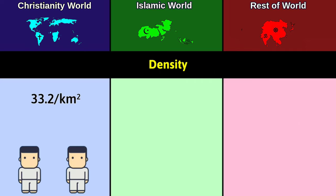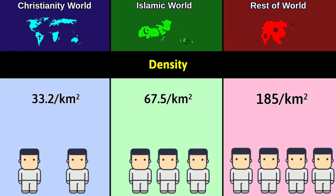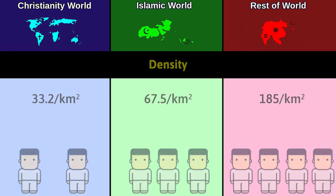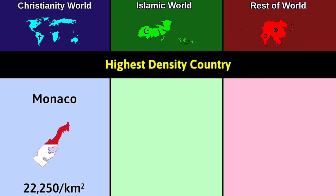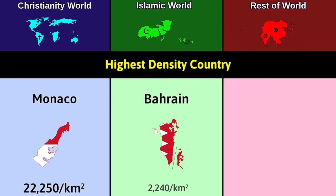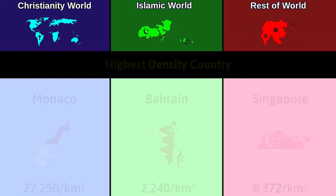Density: Christianity world 33.2 per square kilometer; Islamic world 67.5 per square kilometer; Rest 185 per square kilometer. Highest density country: Christianity — Monaco at 22,250 per square kilometer; Islam — Bahrain at 2,240 per square kilometer; Rest — Singapore at 8,372 per square kilometer.